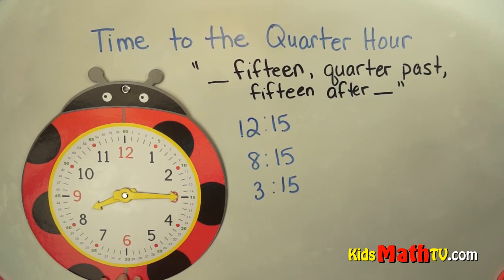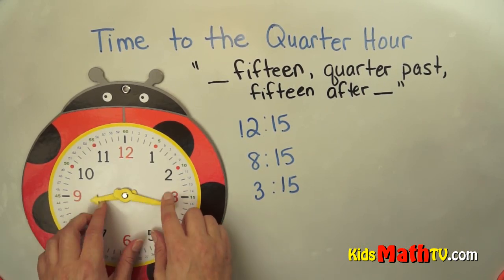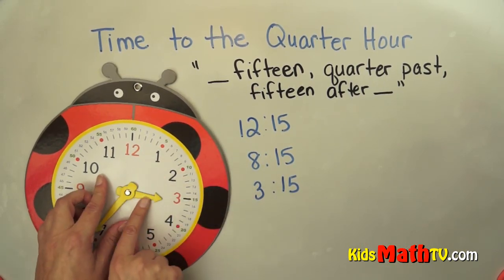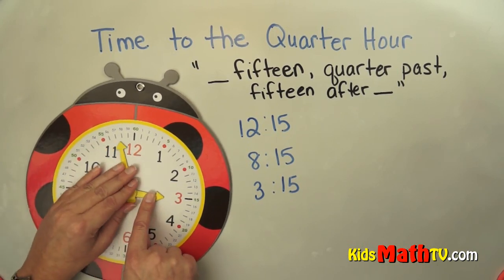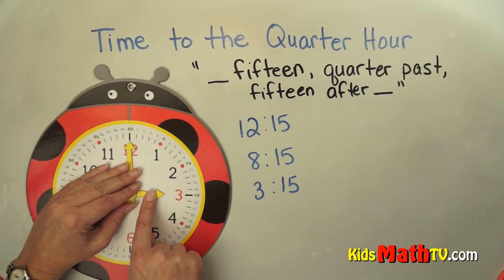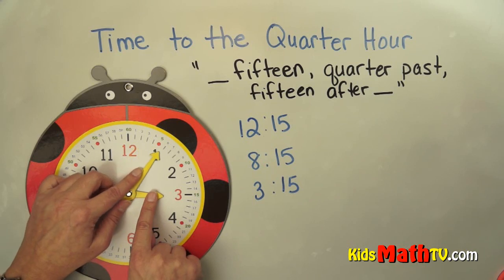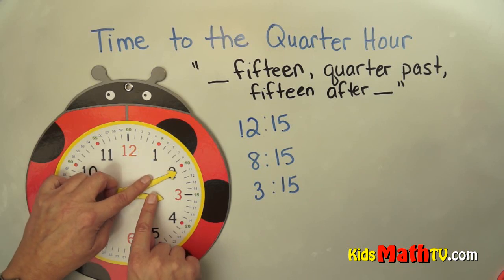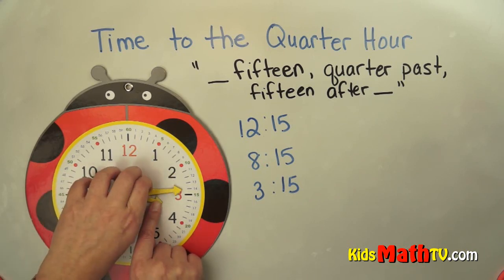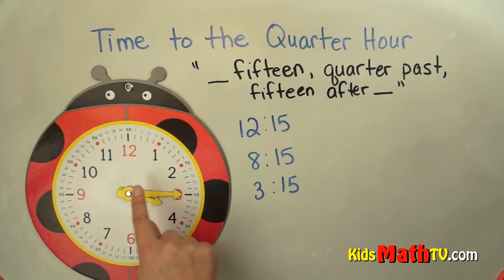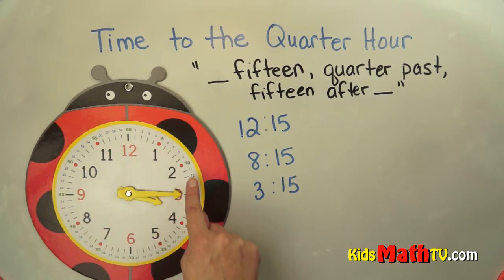Let's try 3:15. Our hour hand would be on the 3 — this would be 3 o'clock. We go 15 minutes after: the hour hand just a little bit past the 3 and the minute hand right on the 15 — 5, 10, 15.